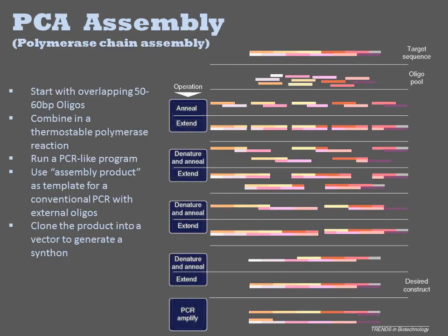The other common way of assembling oligonucleotides into gene-length DNAs is polymerase chain assembly, or PCA. Like with LCA, the target sequence is synthesized as a pool of shorter oligonucleotide sequences that can be assembled into the full-length sequence in a one-pot reaction.